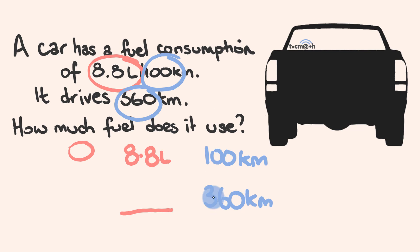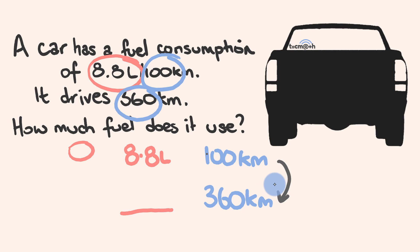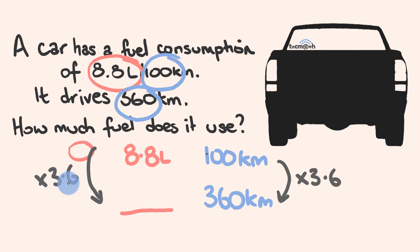How much would you multiply 100 by to get 360? We do 360 divided by 100, which gives us 3.6. So we're going 3.6 times as far, meaning we're going to use 3.6 times as much petrol. 8.8 times 3.6 gives us our answer: 31.7 litres of petrol that we need.